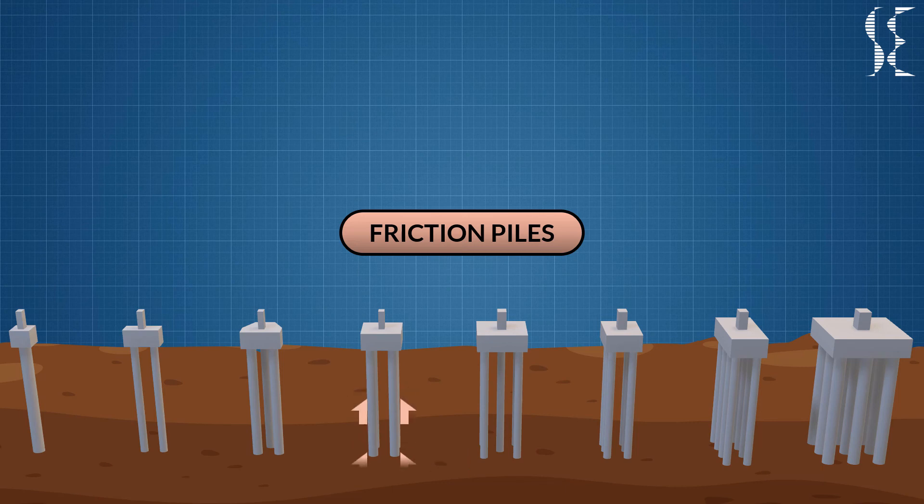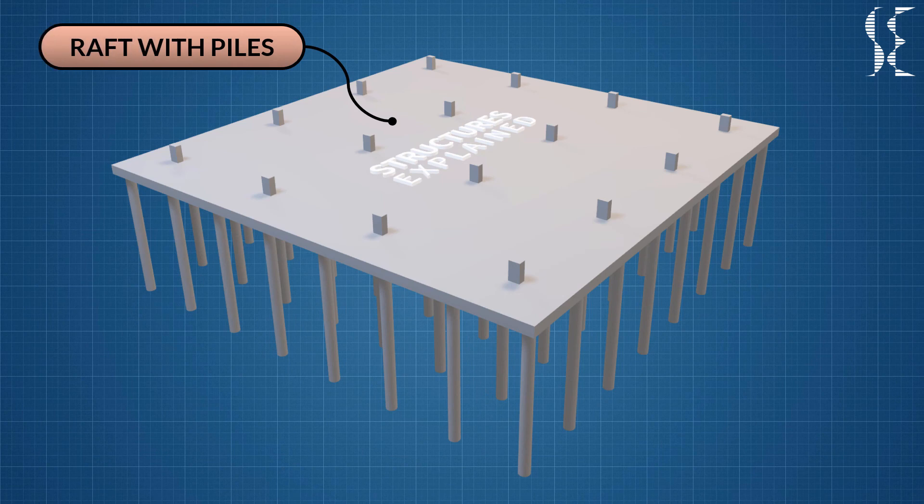Raft foundations can be combined with piles when more number of piles are closely spaced and the whole raft acts as a big pile cap.